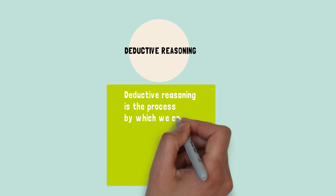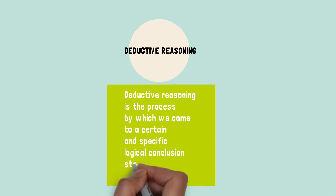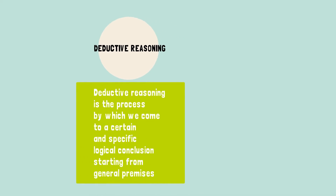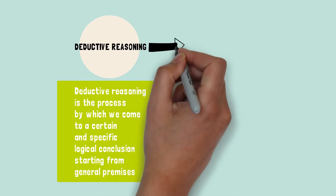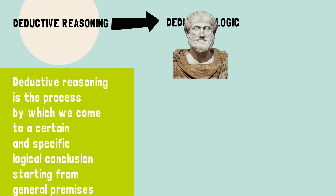Deductive reasoning is the process by which we come to a certain and specific logical conclusion, starting from given general premises. Another name for deductive reasoning is deductive logic. This process was first documented by Aristotle in the 4th century BC.